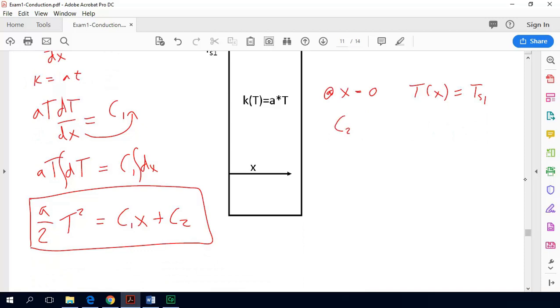We get c2 because this term goes away. We get c2 equals a divided by 2 over Ts squared. That's Ts1 squared. So we just substituted x equals 0 into here and we substituted this Ts1 into here and solved for our constant of integration c2.